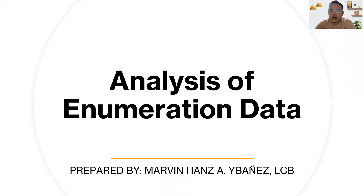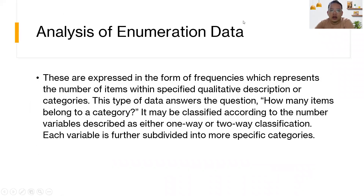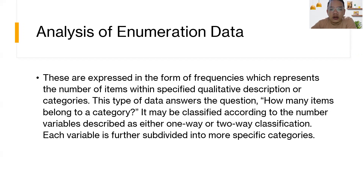What is analysis and enumeration data? These are expressed in the form of frequencies, which represents the number of items within specified qualitative description or categories. This type of data answers the question: how many items belong to a category? It may be classified according to the number of variables described as either one-way or two-way classification. Each variable is further subdivided into more specific categories.